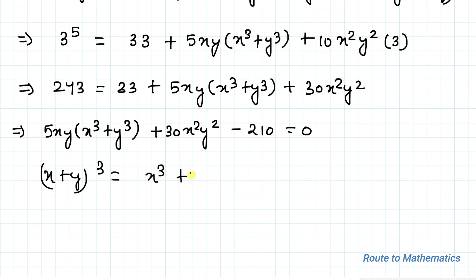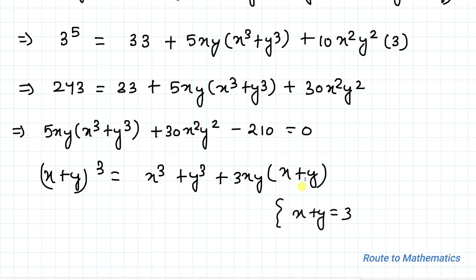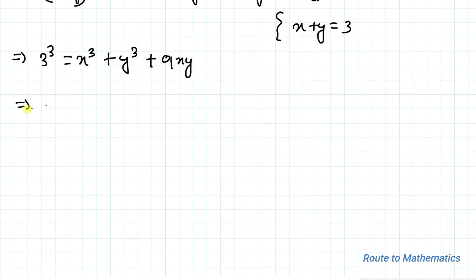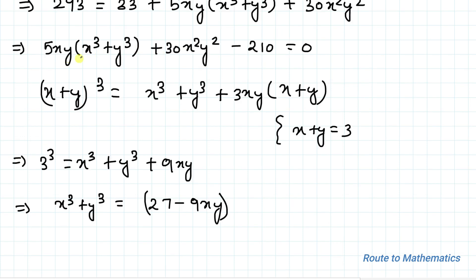We use the algebraic identity (x + y)³ = x³ + y³ + 3xy(x + y). From equation 2, x + y = 3, so 3³ = x³ + y³ + 9xy, giving us 27 = x³ + y³ + 9xy. Therefore, x³ + y³ = 27 − 9xy.